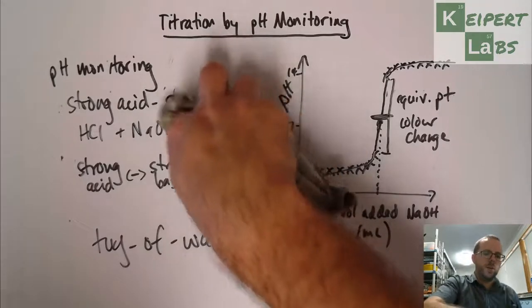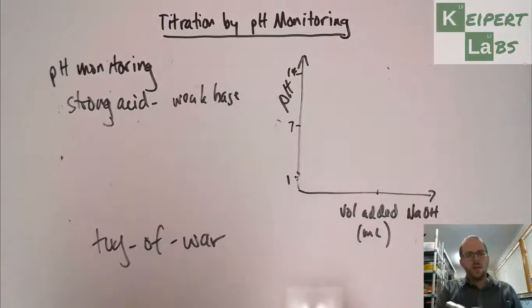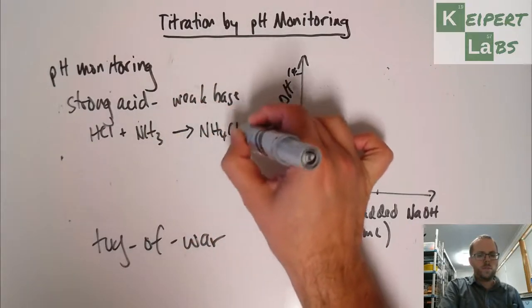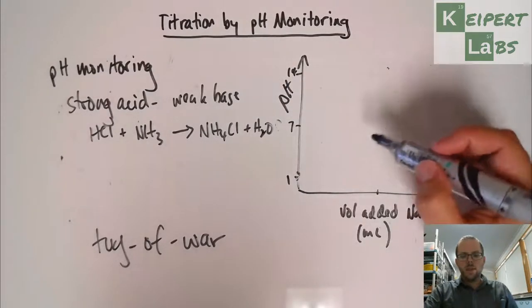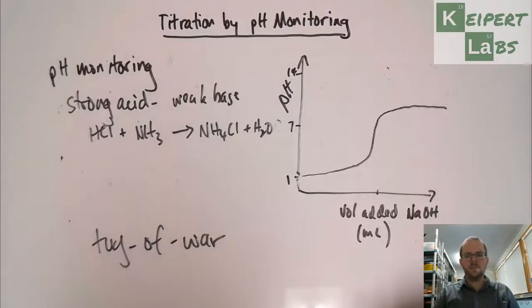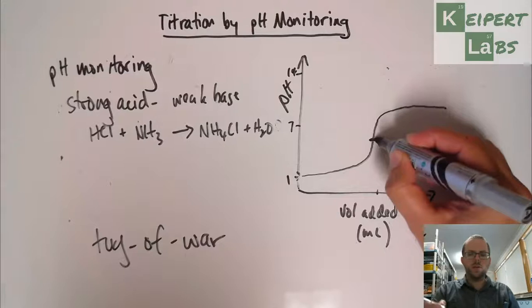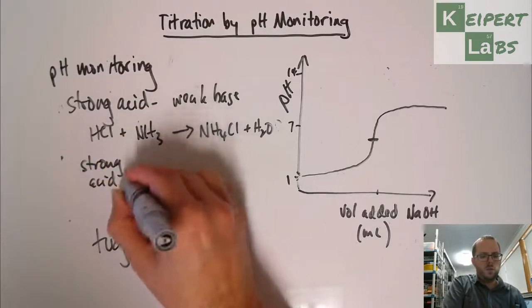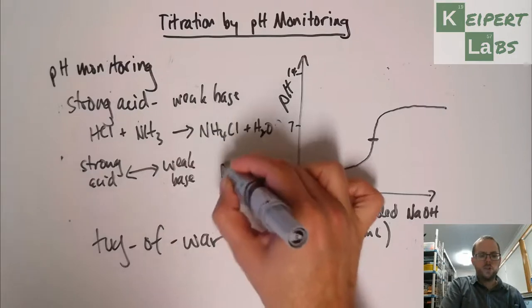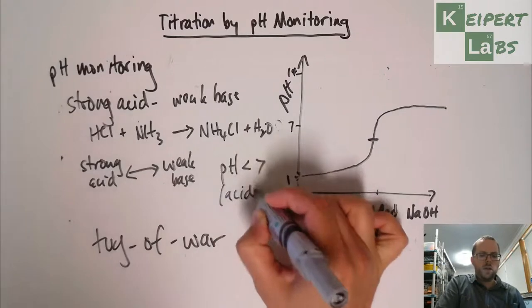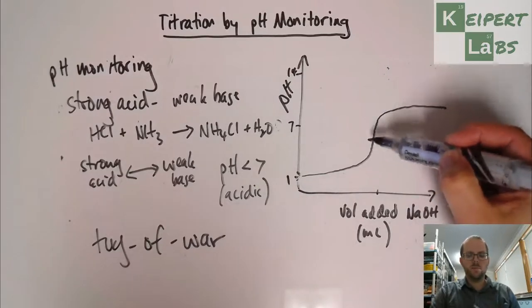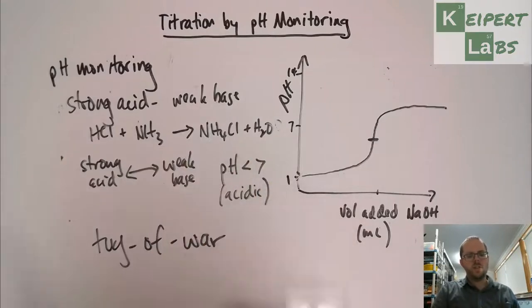Now let's look at the next example—strong acid weak base. So we're going to look at the example of HCl plus NH3, which is a weak base. We're going to get ammonium chloride plus water. What we're going to see is that the curve is going to look more like this. We get a curve where halfway through the equivalence point is going to be pH less than 7. So strong acid with a weak base is going to be pH less than 7, which is acidic. Think about it like a tug-of-war again. The strong acid is going to pull more towards its side than the weak base. So the pH pulls towards the acid side.